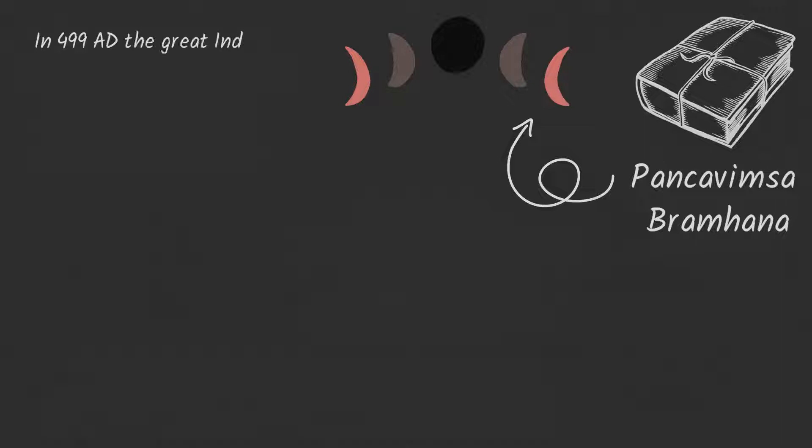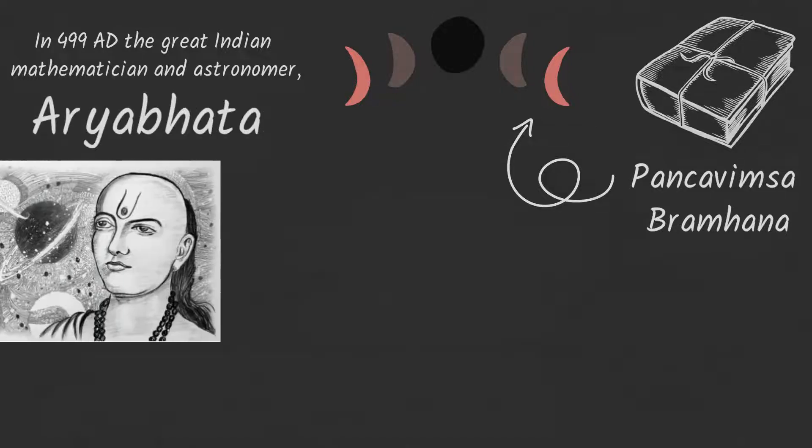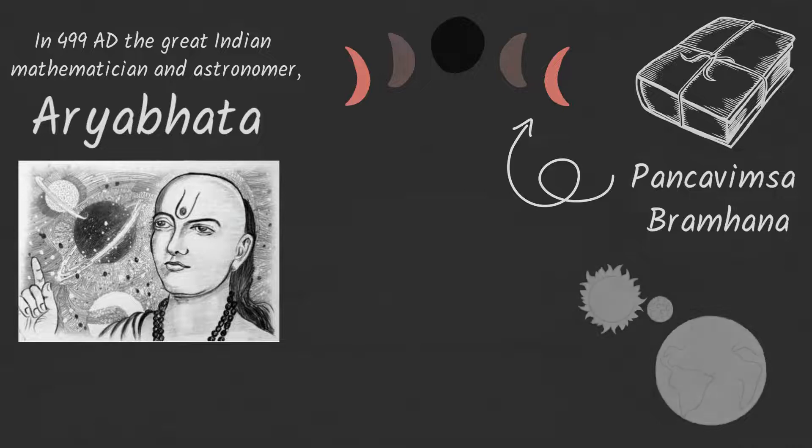In 1499 AD, the great Indian mathematician and astronomer Arya Bhatta explained that the eclipse occurred because either the moon comes between the sun and earth, or the moon goes into the shadow of the earth. Using purely geometrical arguments and the relative size of objects, he gave an excellent formulation for the calculation of eclipse parameters.